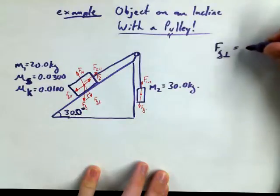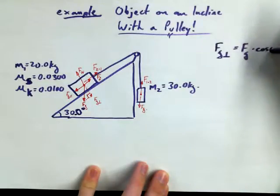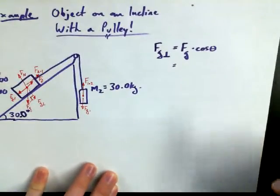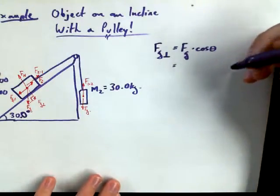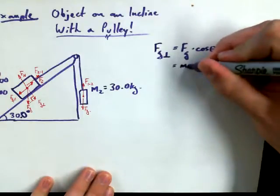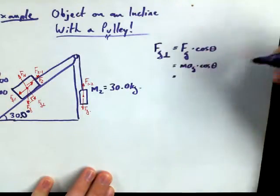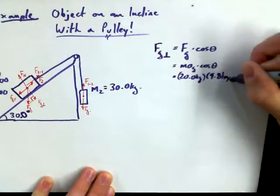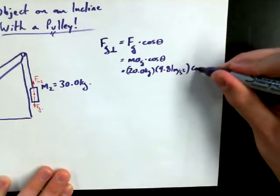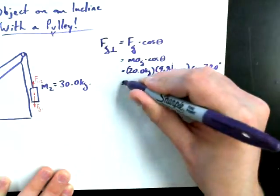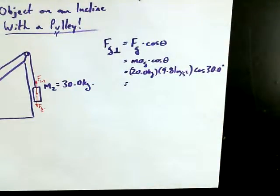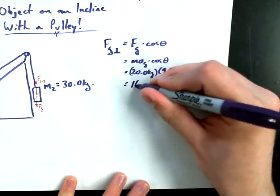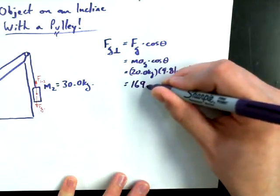FG perpendicular is going to be FG times cosine of theta. We can do mass times acceleration due to gravity times cosine theta. So 20 kilograms times 9.81 meters per second squared times cosine 30. Has anybody got that value already? 169.91 newtons. Okay, 169.91 newtons.